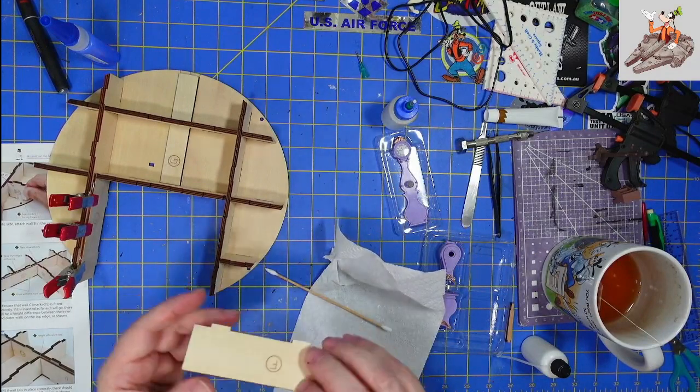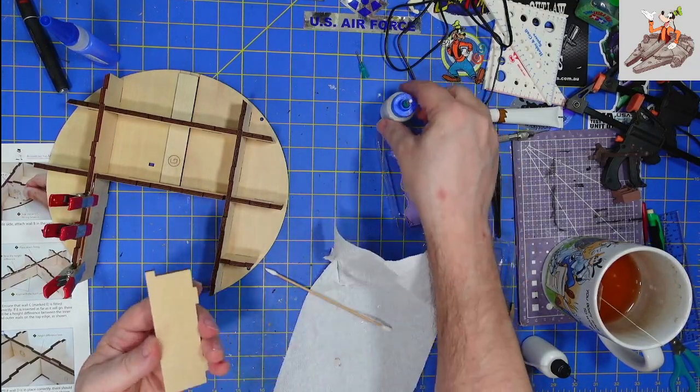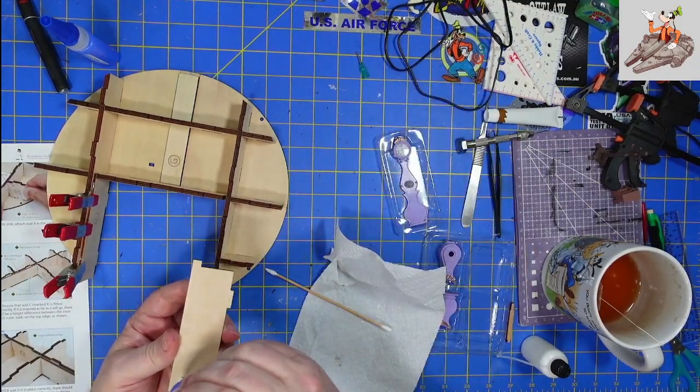Now I can clean that off, the excess glue that came out there. It's better to clean off this glue now than to let it dry and have to fight with it because it's set like a rock. So there's that one. Go ahead and do the other side. Do the exact same thing, except we're going to do it in a little bit different order. I'm going to put it on here first.